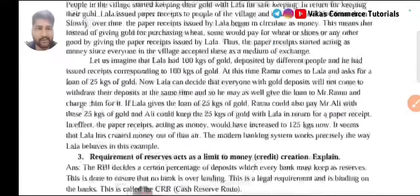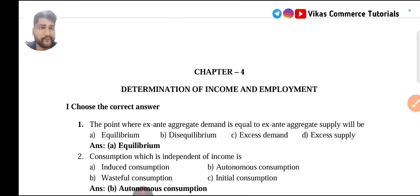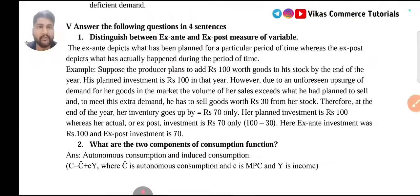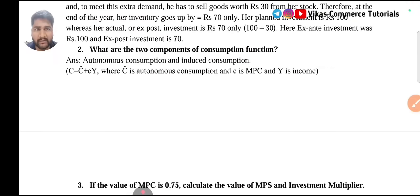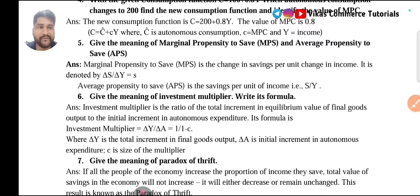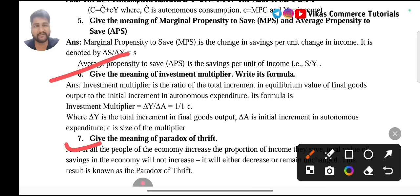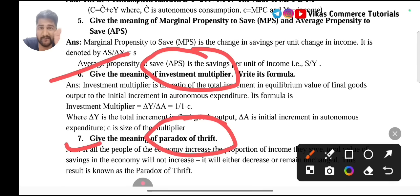Moving to Chapter 4 of macroeconomics: Determination of Income and Employment. Components of consumption function and investment function are already given in the four-marks category, so no need to study them for two marks. The important question from this chapter is question number six: meaning of investment multiplier and write the formula. And question number seven: meaning of paradox of thrift. What do you mean by paradox of thrift and what do you mean by investment multiplier? These are the two important questions from Determination of Income and Employment.